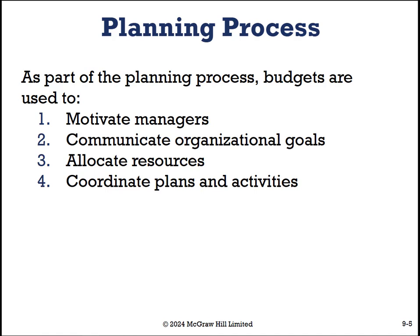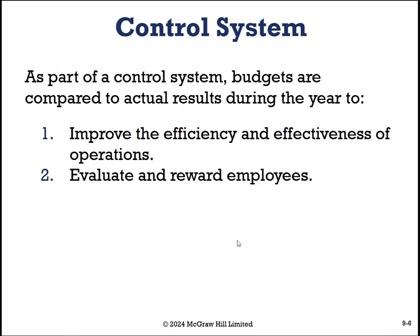This is a centralized plan — this is what we're going to do, this is how we plan to do it, everybody on board. And then we always have to look at how did we do with the plan. Part of the control system is that budgets are compared to actual results during the year and on a rolling basis, to improve both the efficiency and effectiveness — how well are we using our resources, and could we use fewer resources to obtain the same objective?